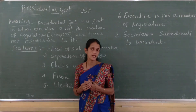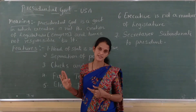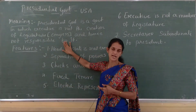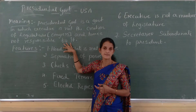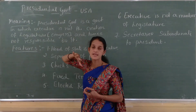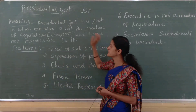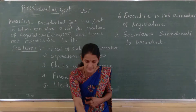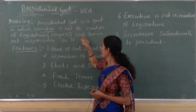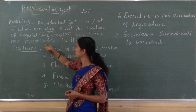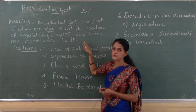The presidential form of government is a government in which the executive is not the creation of the legislature or congress. In the United States of America, the legislature is known as congress, while in England and India, it is known as parliament. The executive — meaning the president — is not created by the congress, and hence the executive is not responsible to the legislature.